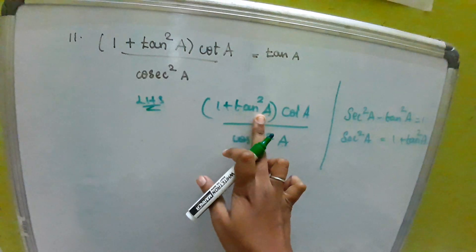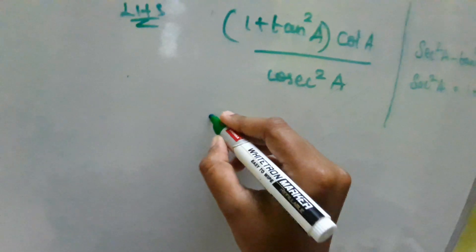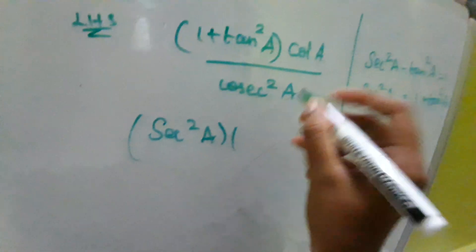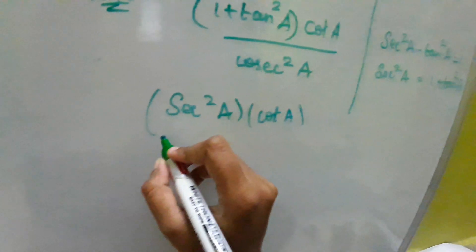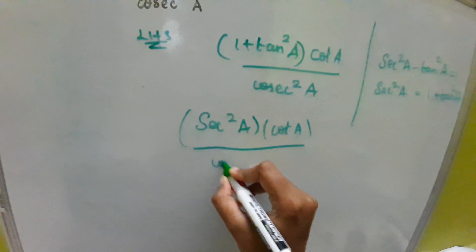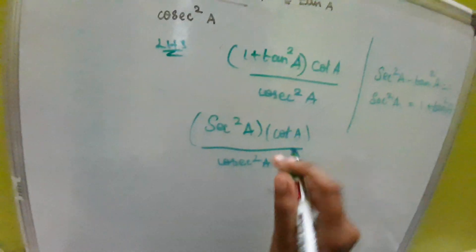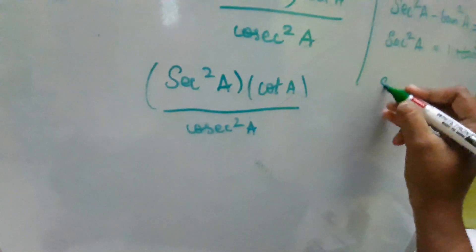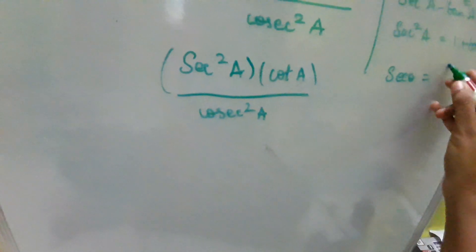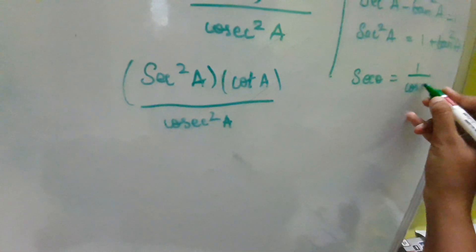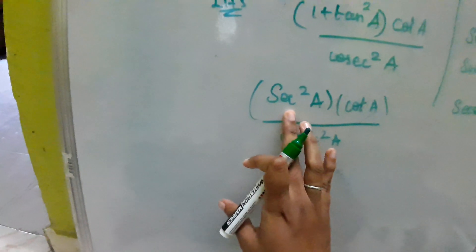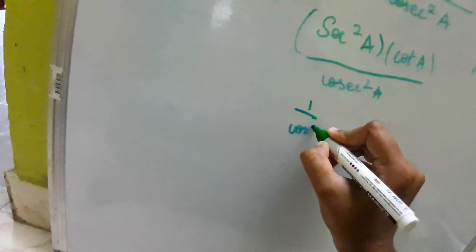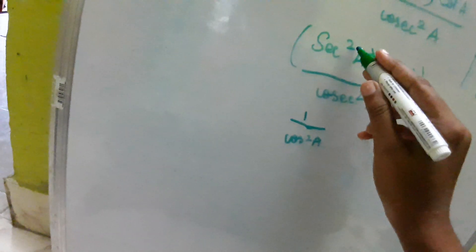So 1 plus tan squared a becomes secant squared a. The cot a will remain as it is, divided by cosecant squared a. Now applying the formula: secant theta equals 1 by cos theta. So instead of secant squared a, I'm taking 1 by cos squared a.